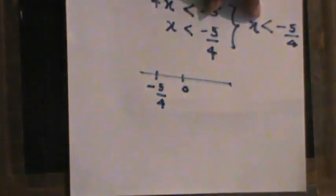Drawing this on a number line: zero is marked, and minus 5 over 4 (which equals minus 1.25) is to the left of zero. Since x is strictly less than minus 5 over 4 and not equal, draw an uncolored open circle at that point. X is going further toward the negative side, so shade from minus 5 over 4 all the way to negative infinity. All values in that range satisfy the inequality.